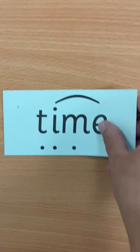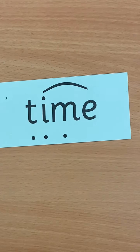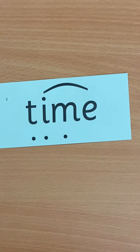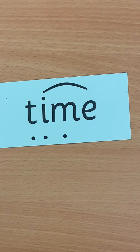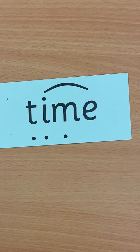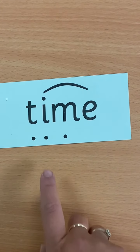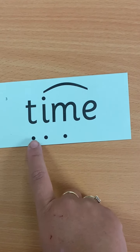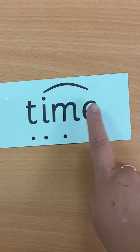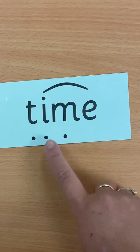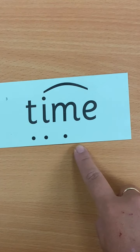Well done. Let's have a look at some green words with the I sound in them. Can you spot the I sound? Let's do this one together: T, I, M — time.